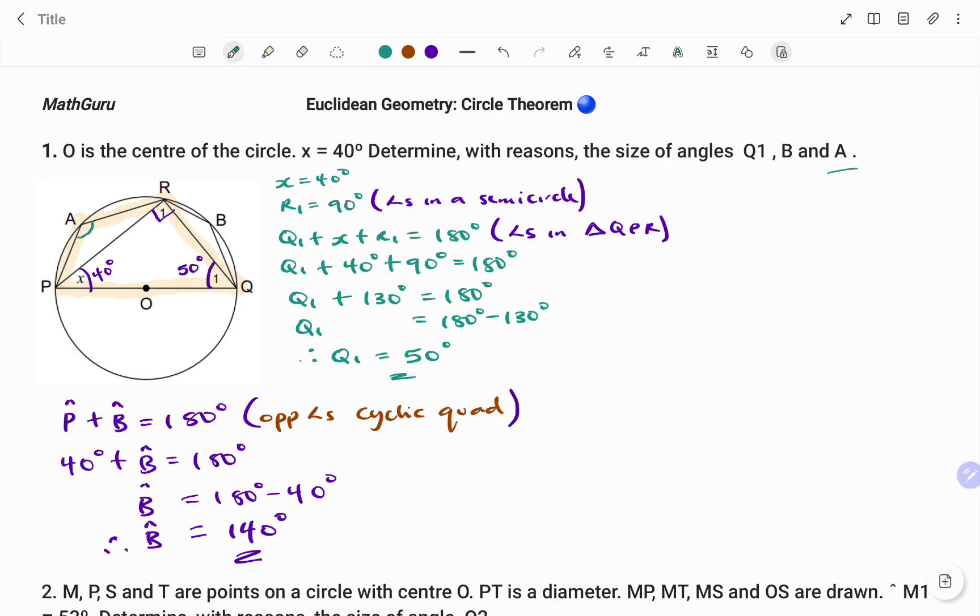So therefore, if you look at the diagram I have, angle A is opposite angle Q. So therefore, using the same rule, that angle A plus angle Q is equal to 180 degrees, same reason, opposite angles of cyclic quad. Therefore, putting in the values, angle A plus, we know Q1, that's 50 degrees, equals 180 degrees.